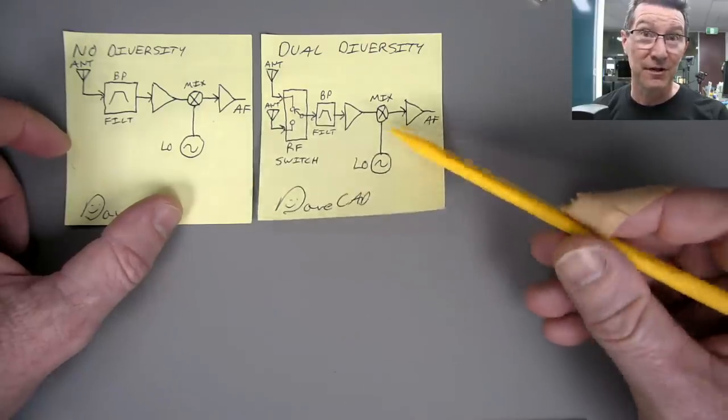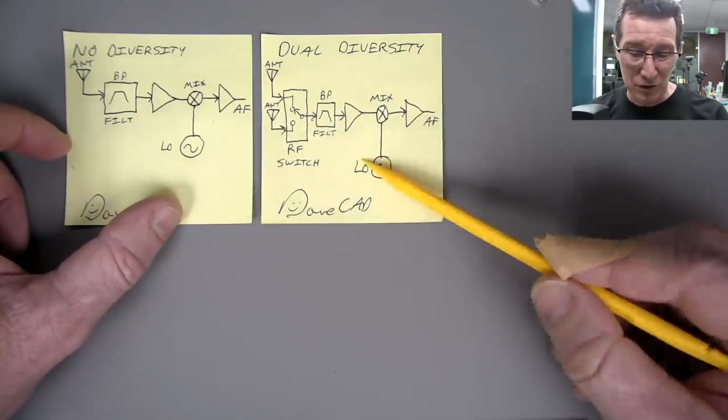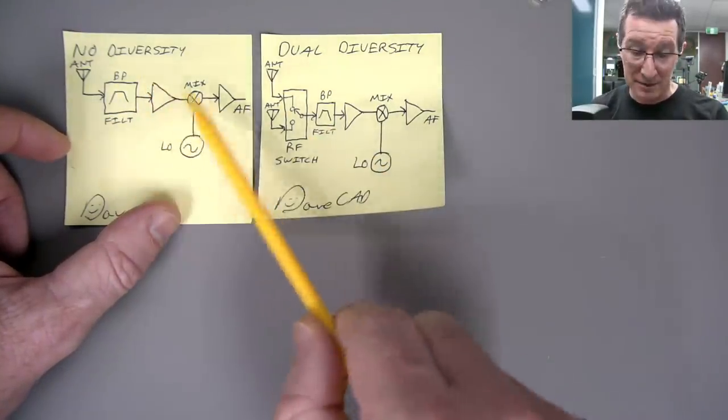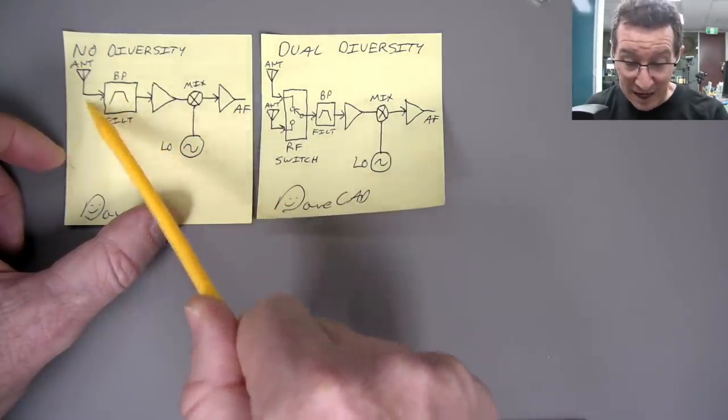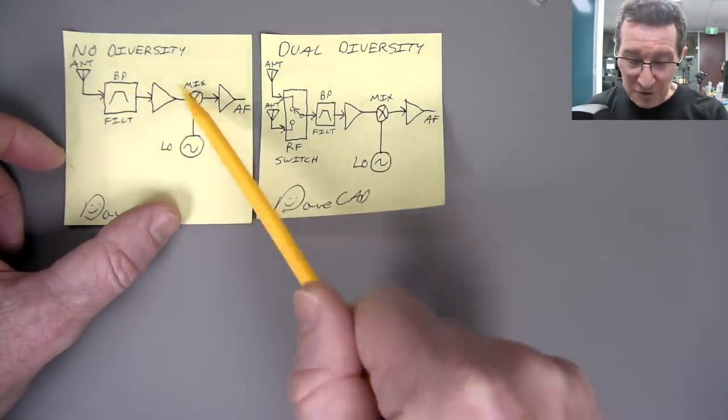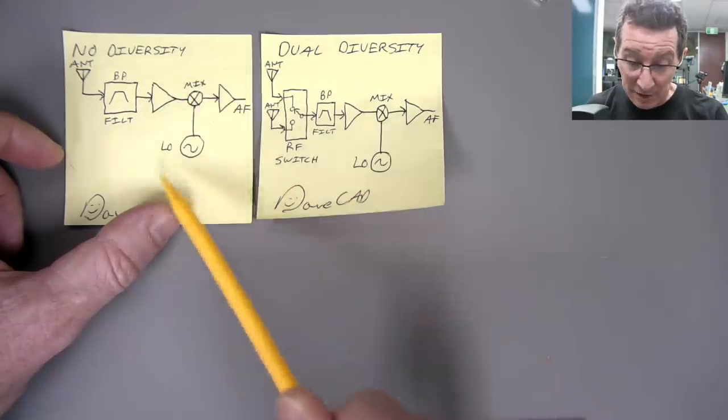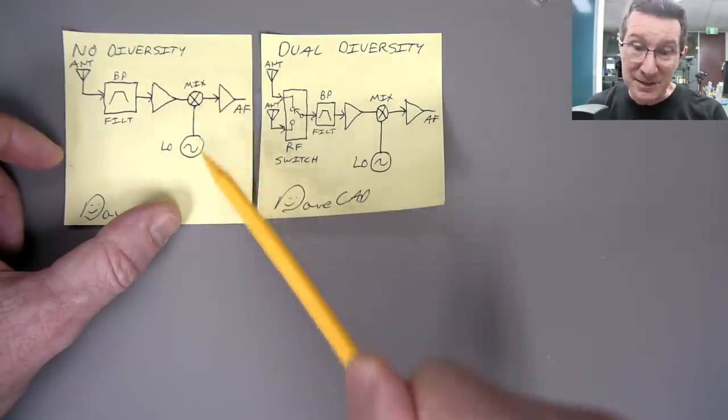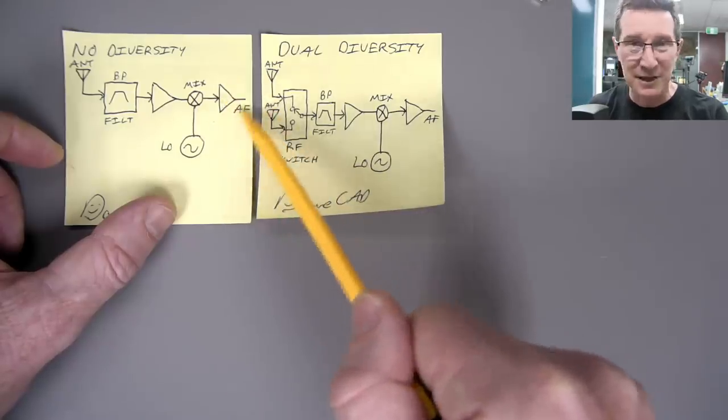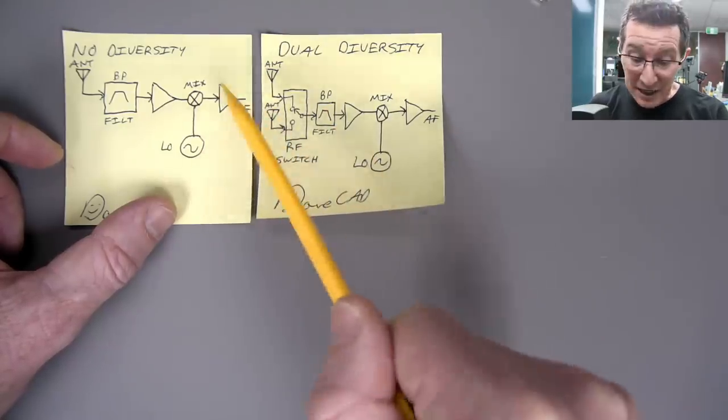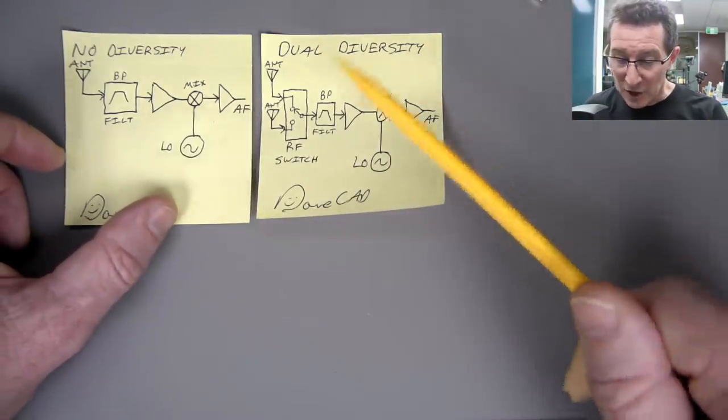So, please excuse the crudity of the model, didn't have time to build it to scale or to paint it. This is a block diagram of a simple RF receiver. You've got the antenna, goes through a filter-y thing, goes into a, like, an RF pre-amplifier, then goes into a mixer, which is then mixed with the local oscillator, and then you can down-convert this and amplify it, and at the end, you get your audio frequency out. Okay? No worries.